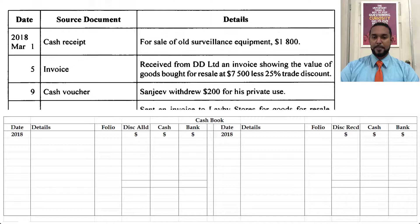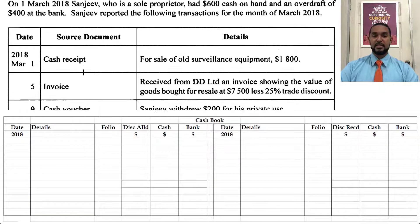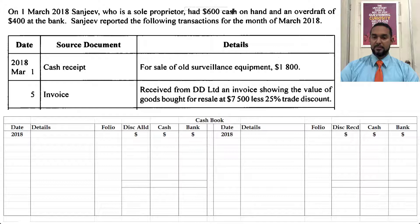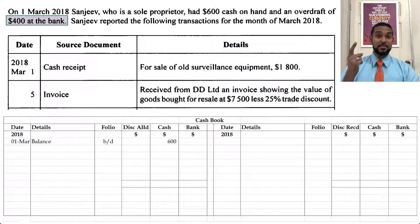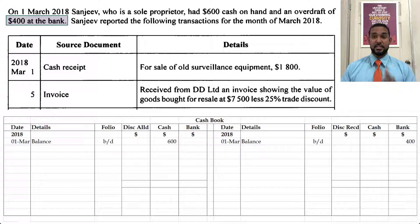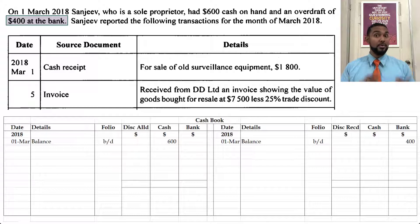Let's go back to the top and get those opening balances going. We have cash on hand of $600. Cash is an asset and assets usually have debit balances, so we put: 1st of March, balance brought down, cash $600. There is an overdraft of $400 at the bank, so that's going to be a credit balance brought down, because an overdraft means you owe the bank money, and liabilities have credit balances when brought down.